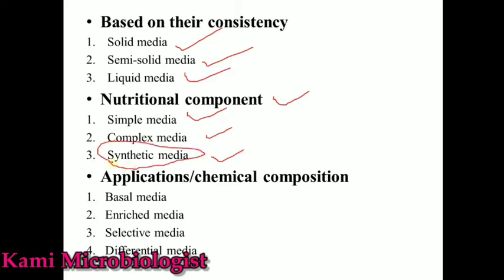The third type is synthetic media. In this type the media contains all the components, but we can prepare it ourselves according to our needs. For example, if a bacterium needs to grow in a media containing nutrients like yeast, beef, and so on, we will provide that type of component. This media that we prepare according to our own requirements is called synthetic media.